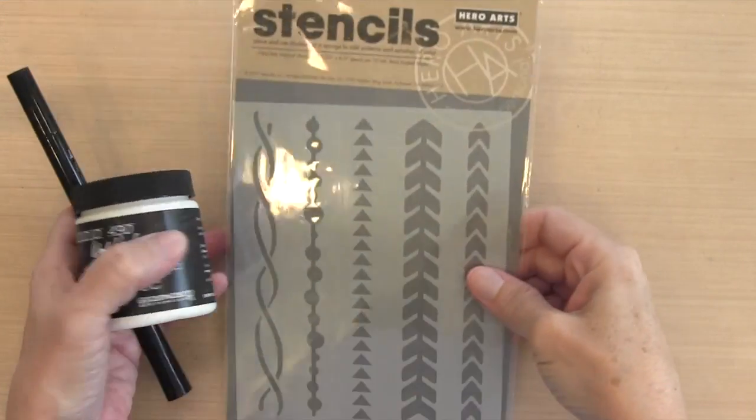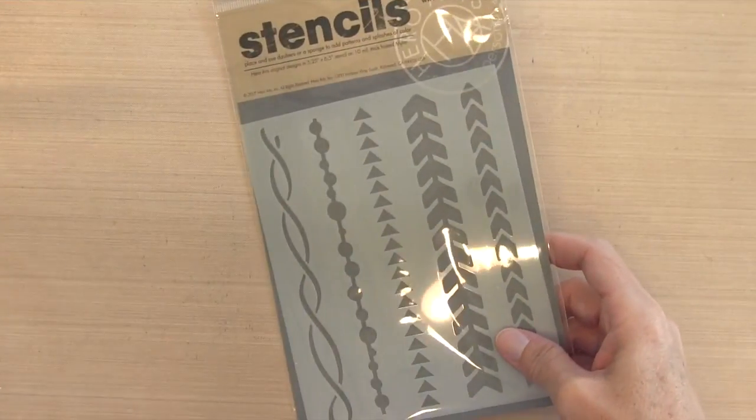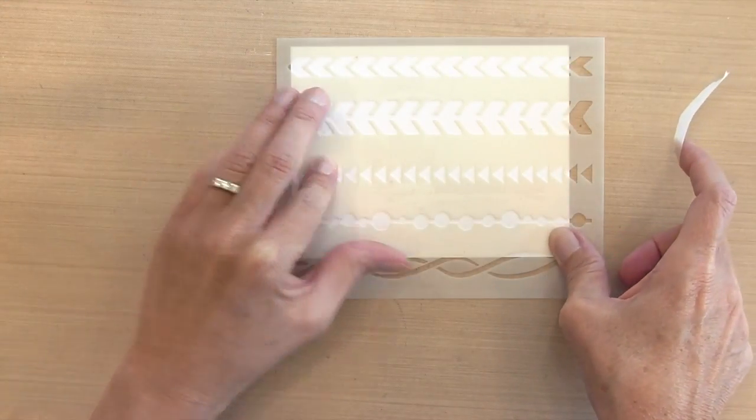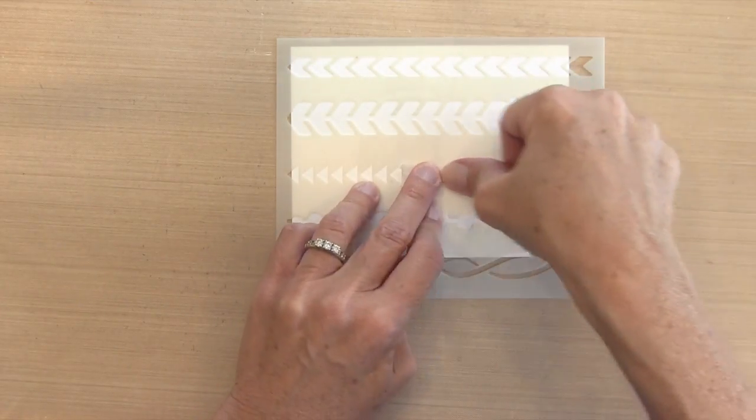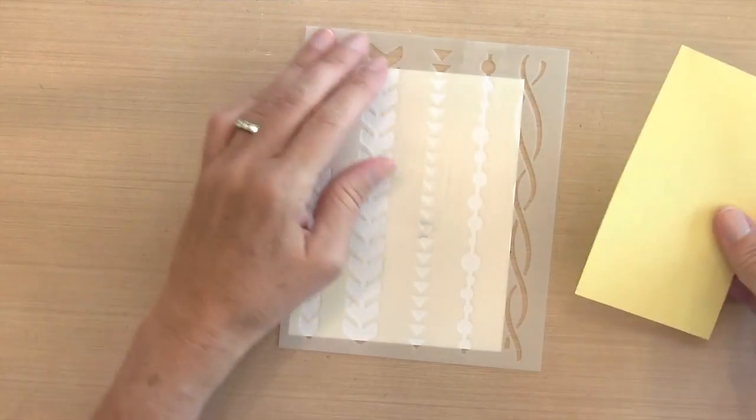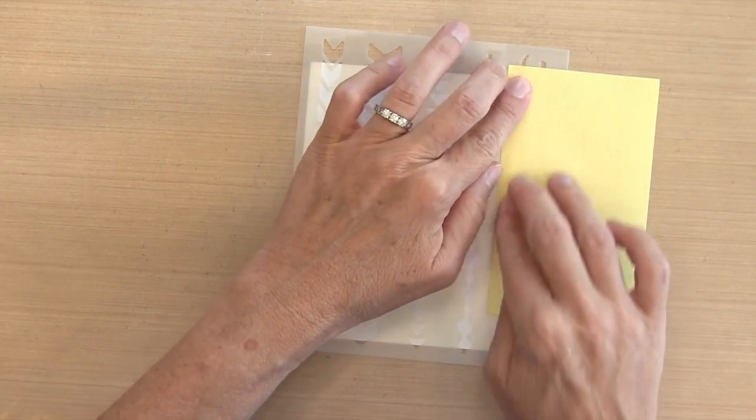I've got embossing paste and a VersaMarker, and my stencil is Hero Arts Stylish Borders. I'm going to start by lining up my stencil at the bottom of a piece of Neenah Solar White cardstock. I'm going to hold it in place with a piece of surgical tape. I'm going to add a post-it to one side to just cover up the part I'm not going to use.